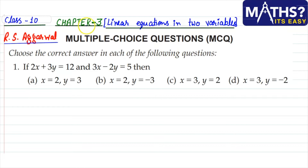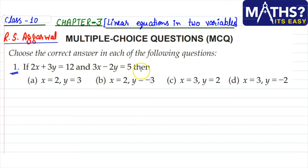Hello everyone. In this video we are going to discuss multiple choice questions of chapter 3, that is linear equations in two variables. Questions are from the RS Aggarwal book. The first question: if 2x + 3y = 12 and 3x - 2y = 5, then we have to find the solution — what is x and what is y?